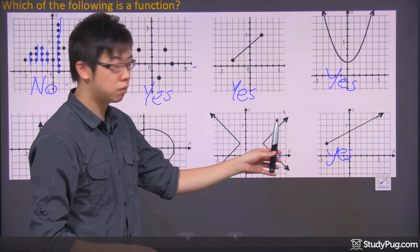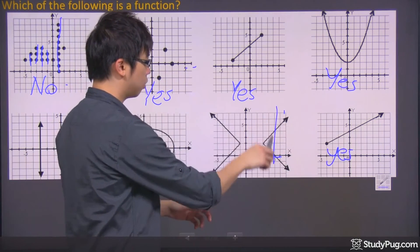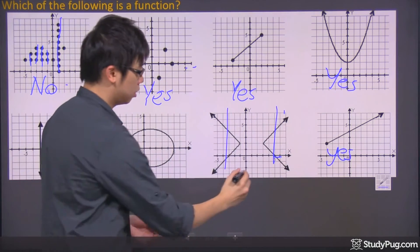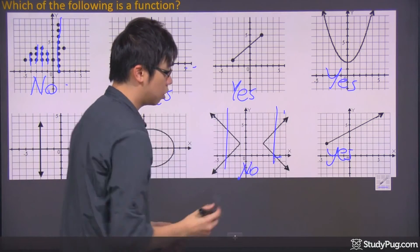The vertical line test is very useful. So, oh whoa, whoa, what's going on here? Oh, you see that? You see that? This is not a function. So the answer is no, okay?